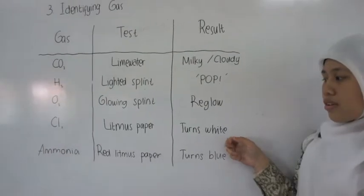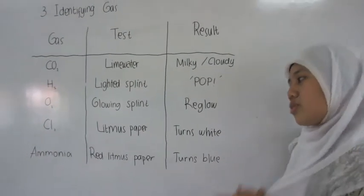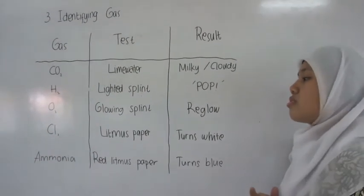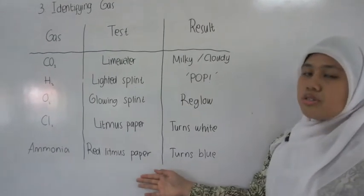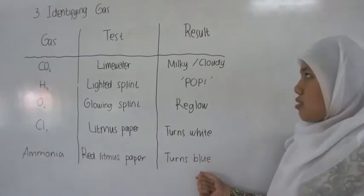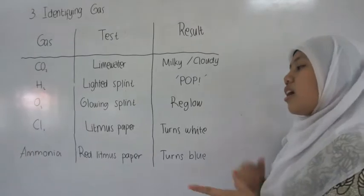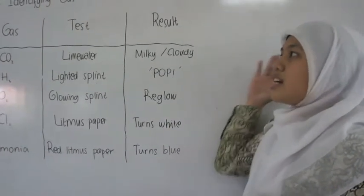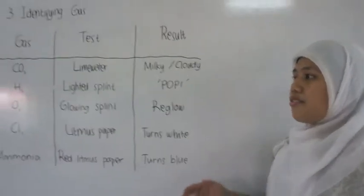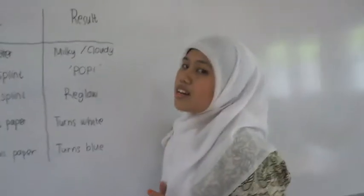And the last thing is ammonia, which also uses litmus paper. But this time, we use the red one, and the result will turn blue. So I have explained all of the gases and ions.